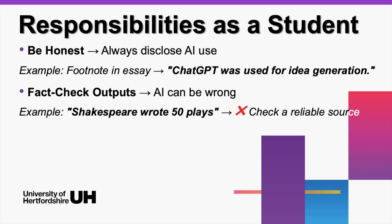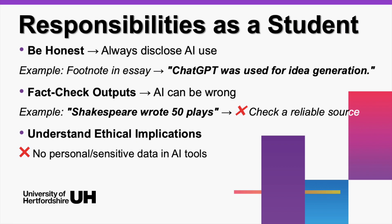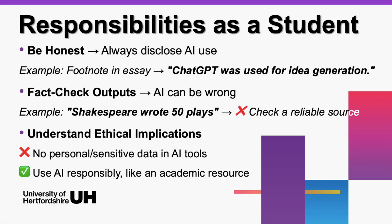ChatGPT might say Shakespeare wrote 50 plays — sounds legit, but a quick Google search tells you it's actually 39. Always double-check your facts. Understand ethical implications — no personal or sensitive data in AI tools. For example, if you're writing a report about a real company, don't paste confidential details into Copilot. AI platforms don't guarantee privacy.